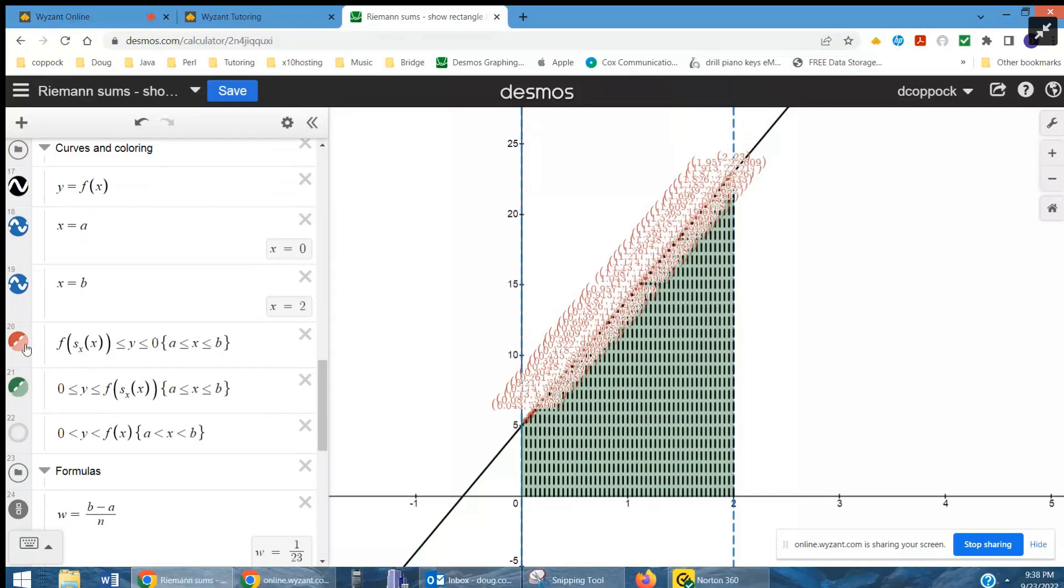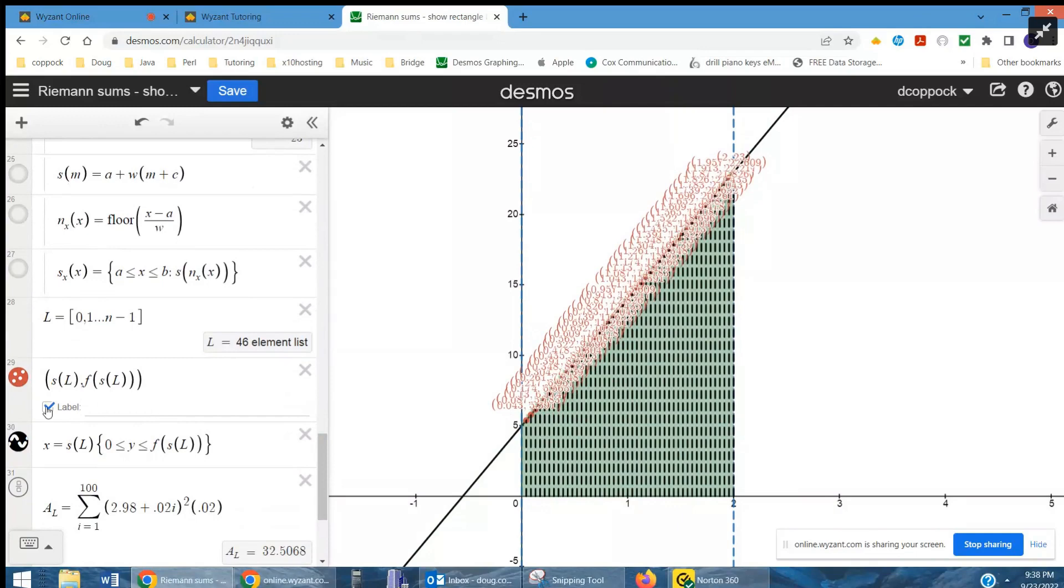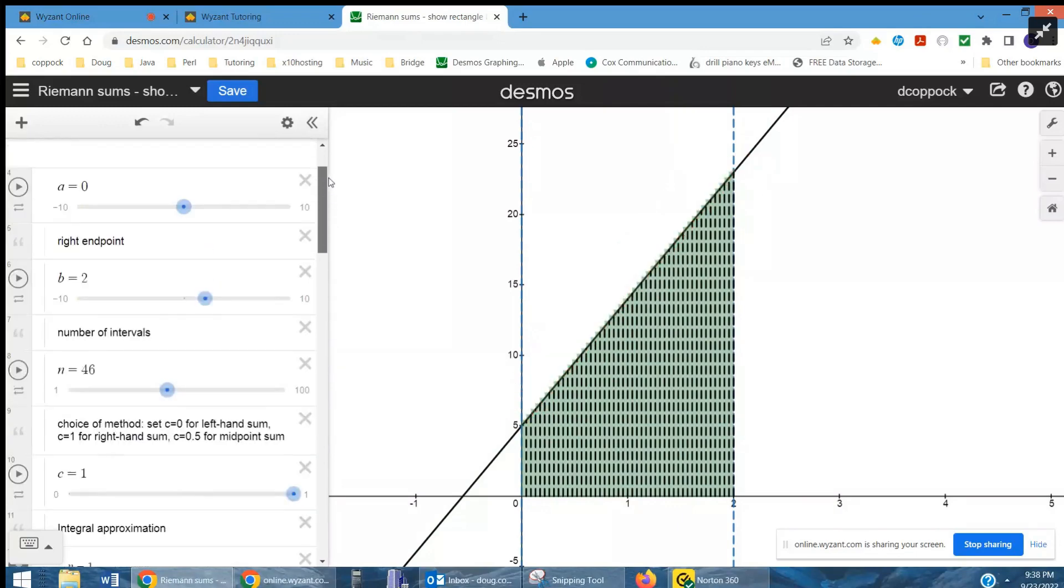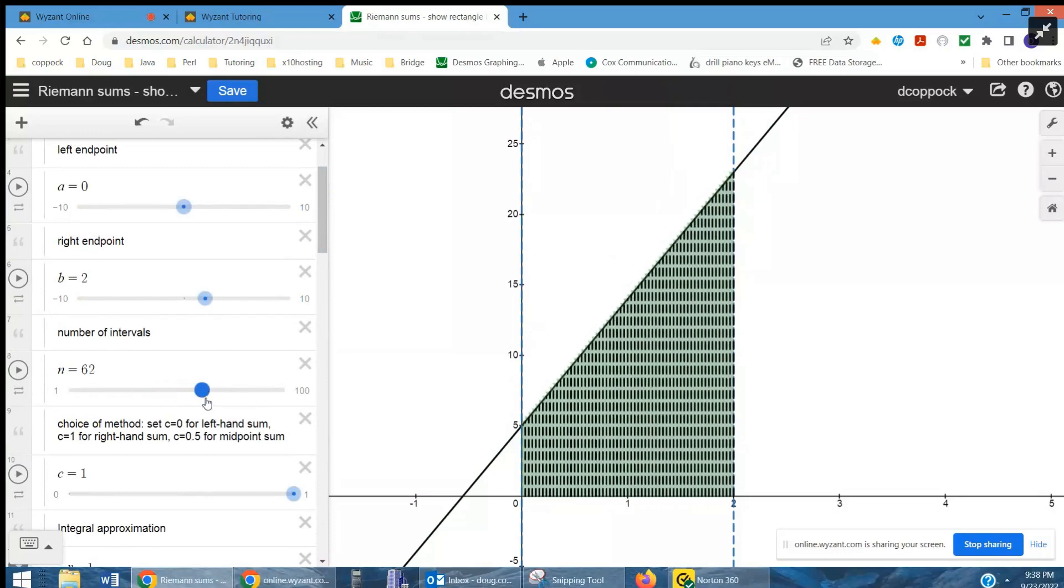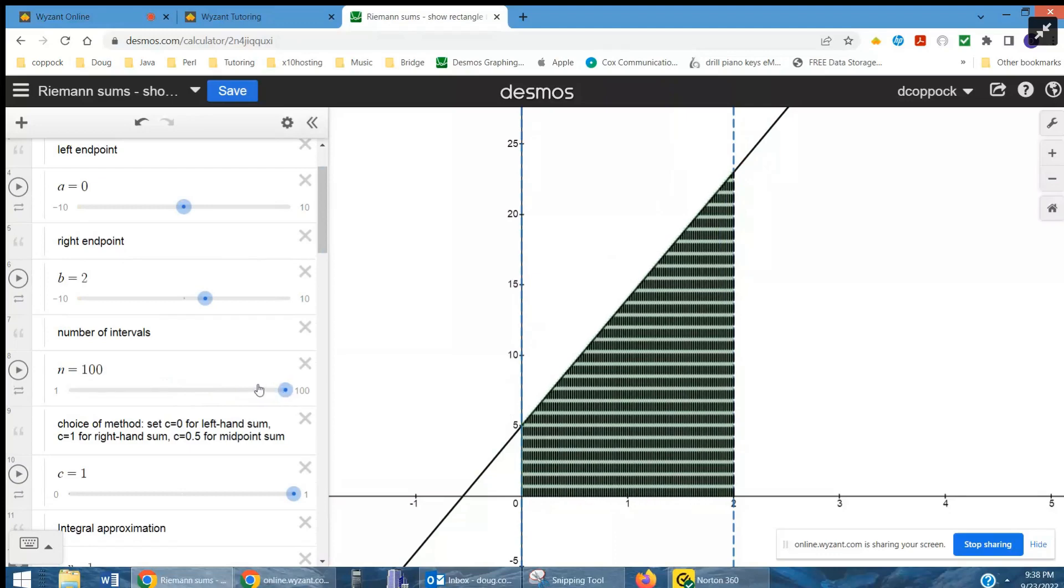Let me see if I can get rid of these. Yeah, there we go. So that's why we're letting n approach infinity. There's 46 rectangles. As we get closer and closer to infinity, we're getting closer and closer to the true area under the curve.